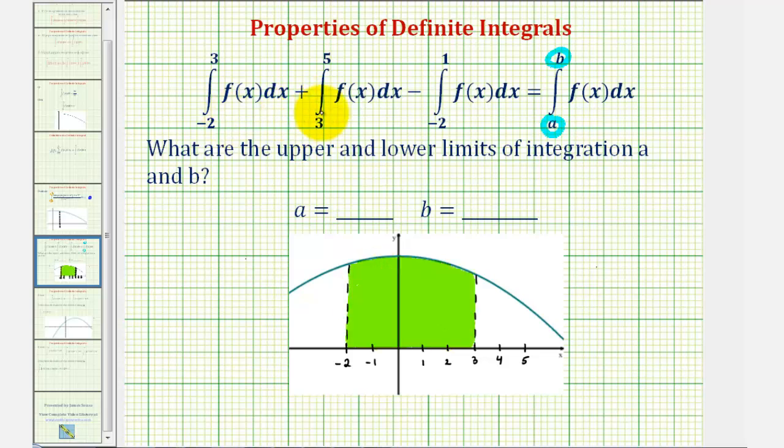And then we have plus the definite integral of f of x from three to five, which would be the area under the function over the interval from three to five, over this interval here.